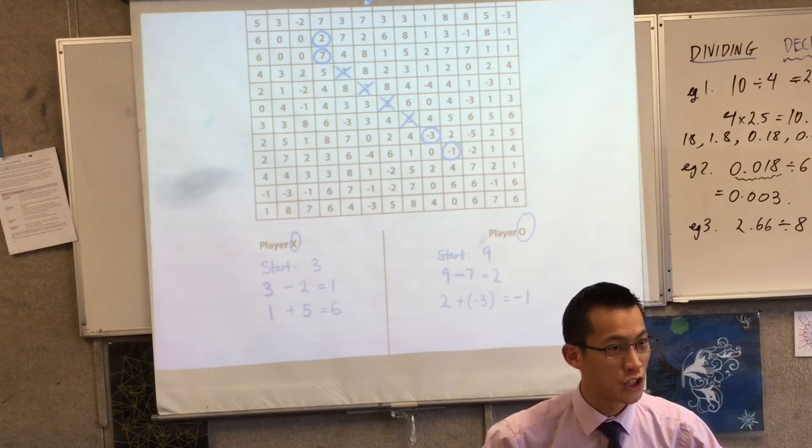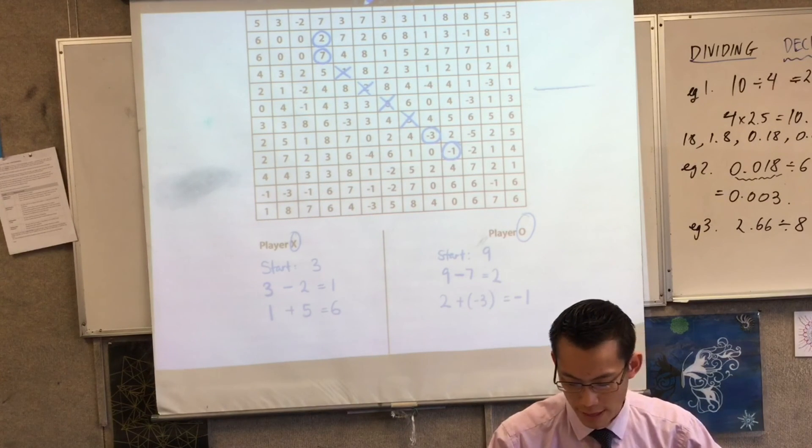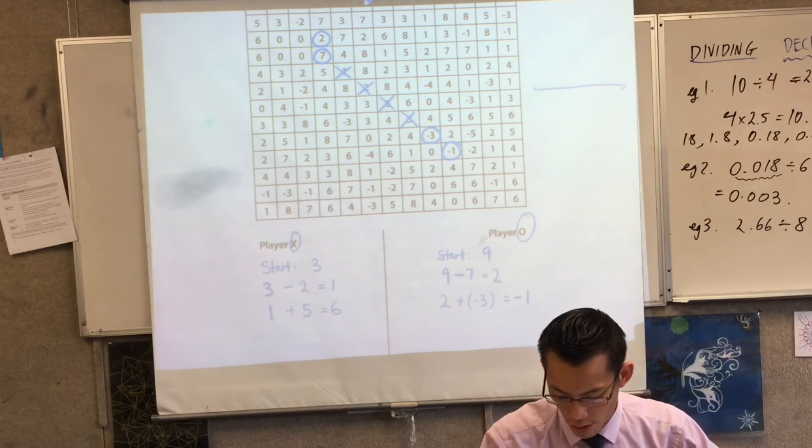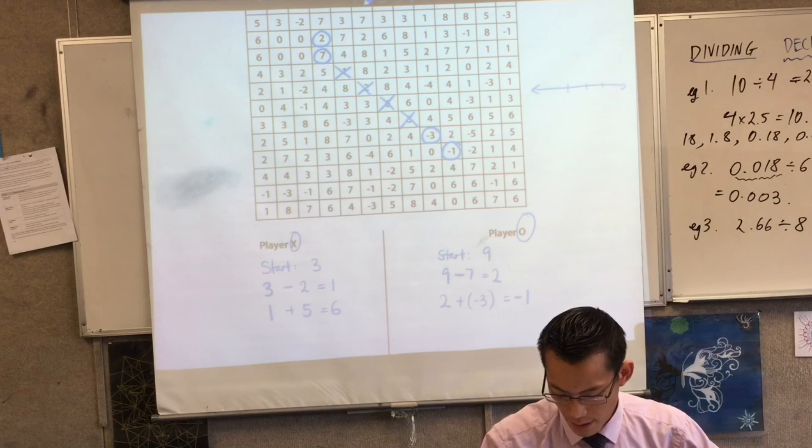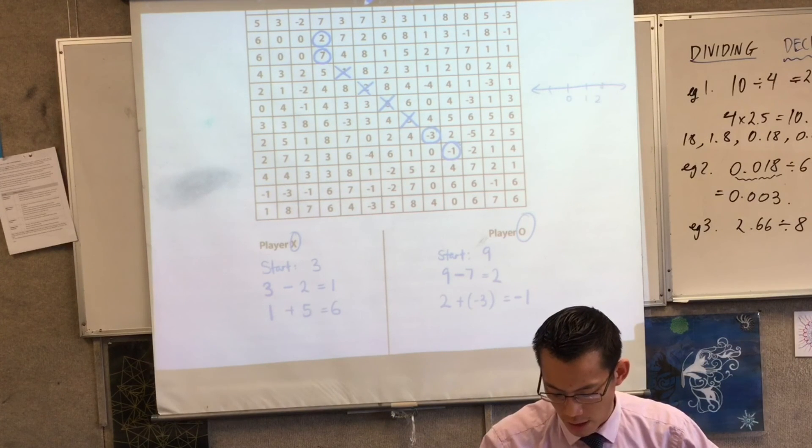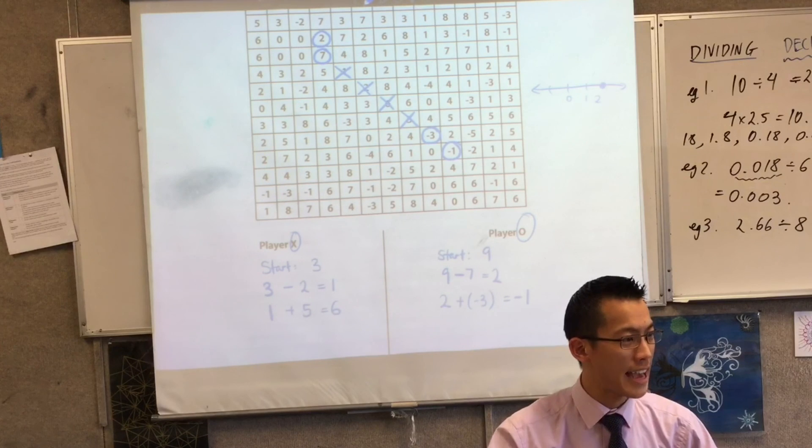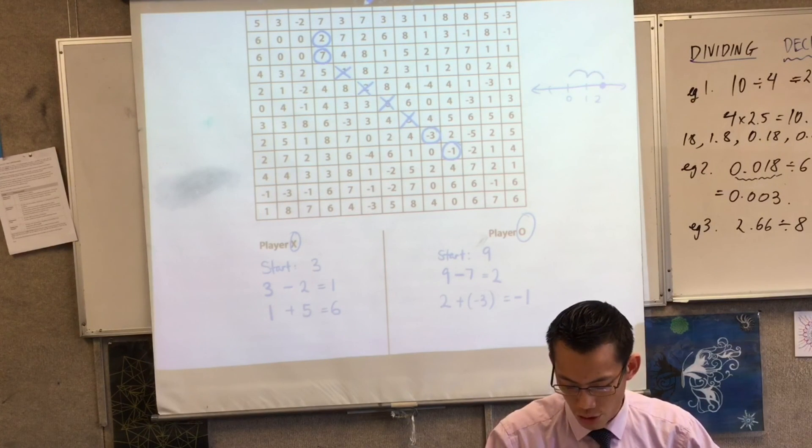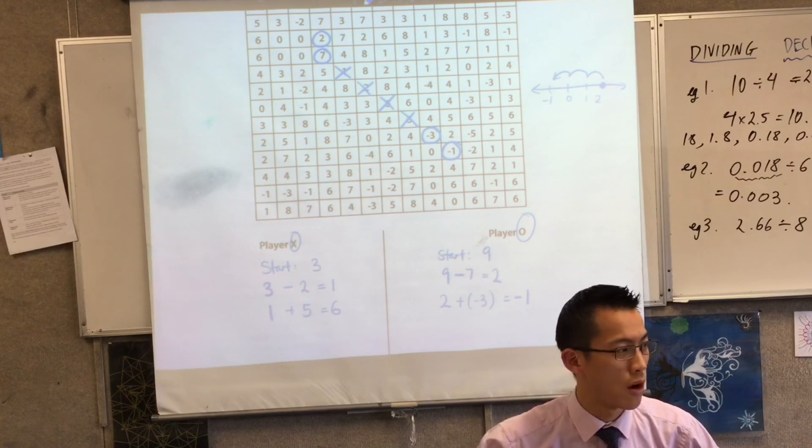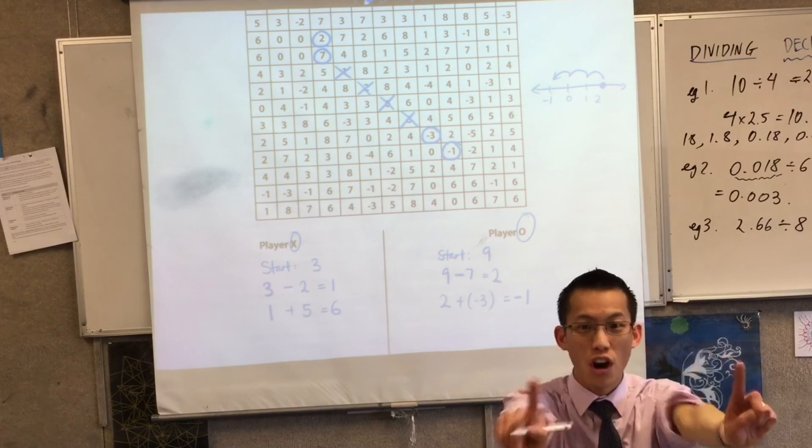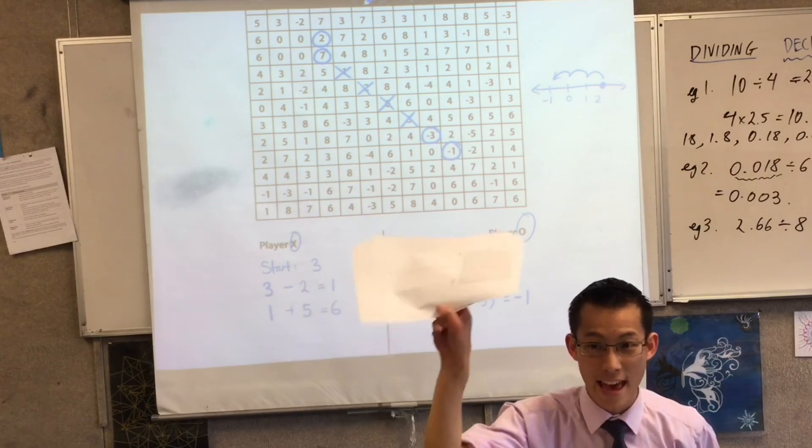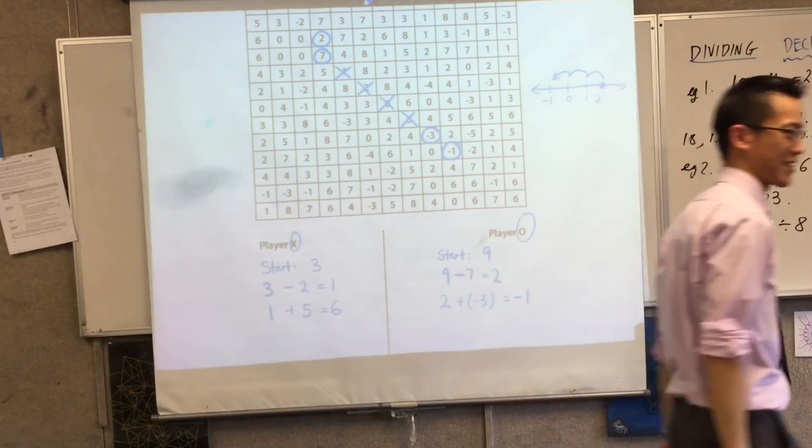You're multiplying? Two plus negative three. If you want to think, and this is why your book might be helpful, here's my number line: zero, one, two. Here's where I start. If I add negative three, I'm going one, two, three to negative one. So the goal is five in a row. You've got two boards there. Good luck, your time starts now.